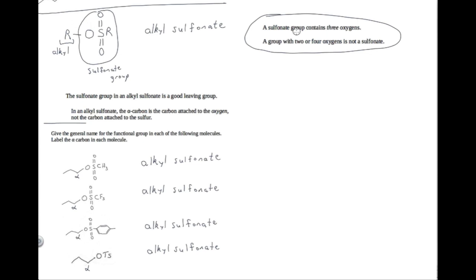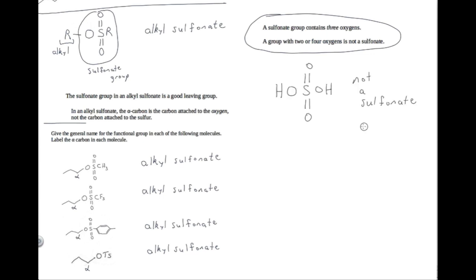Keep in mind that a sulfonate group has three oxygens. In the abbreviated form, you can't see two of the oxygens because they're inside the group, but this also has three oxygens. So if you see a group with two or four oxygens, that's not a sulfonate. For example, this molecule is not a sulfonate because it has four oxygens, not three oxygens.